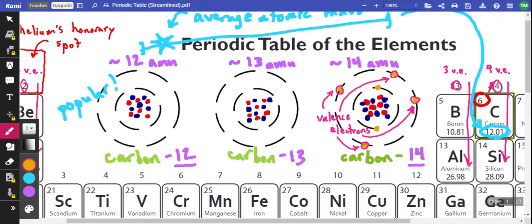The other part of this is the average atomic mass, which basically tells us how heavy an element is, including all its isotopes.